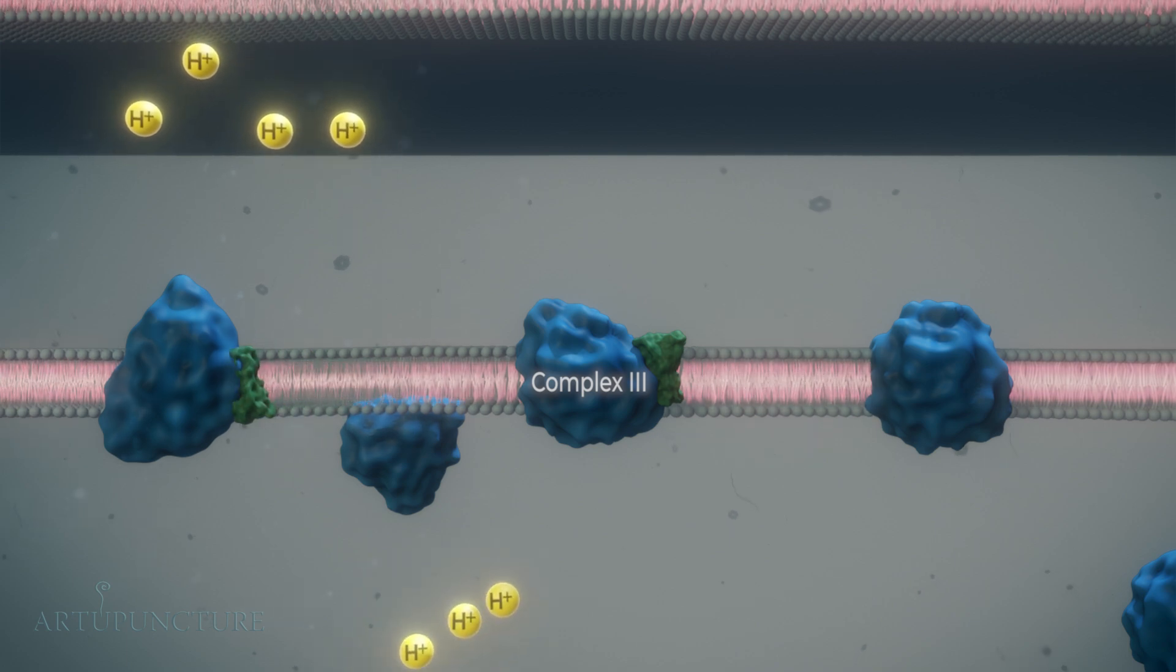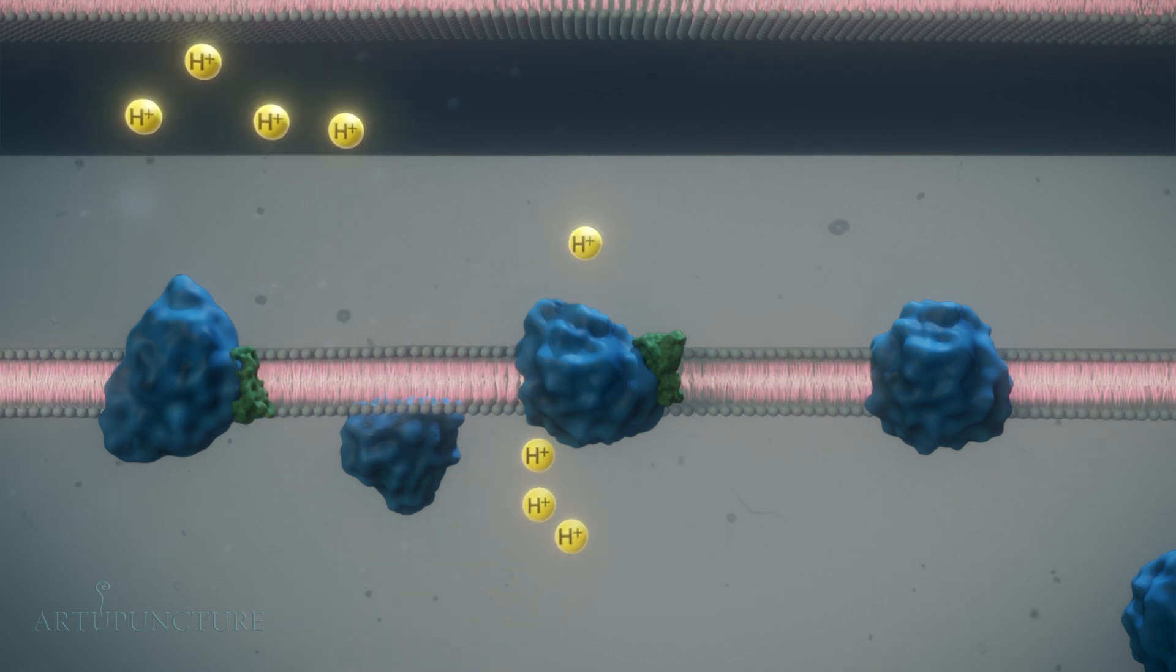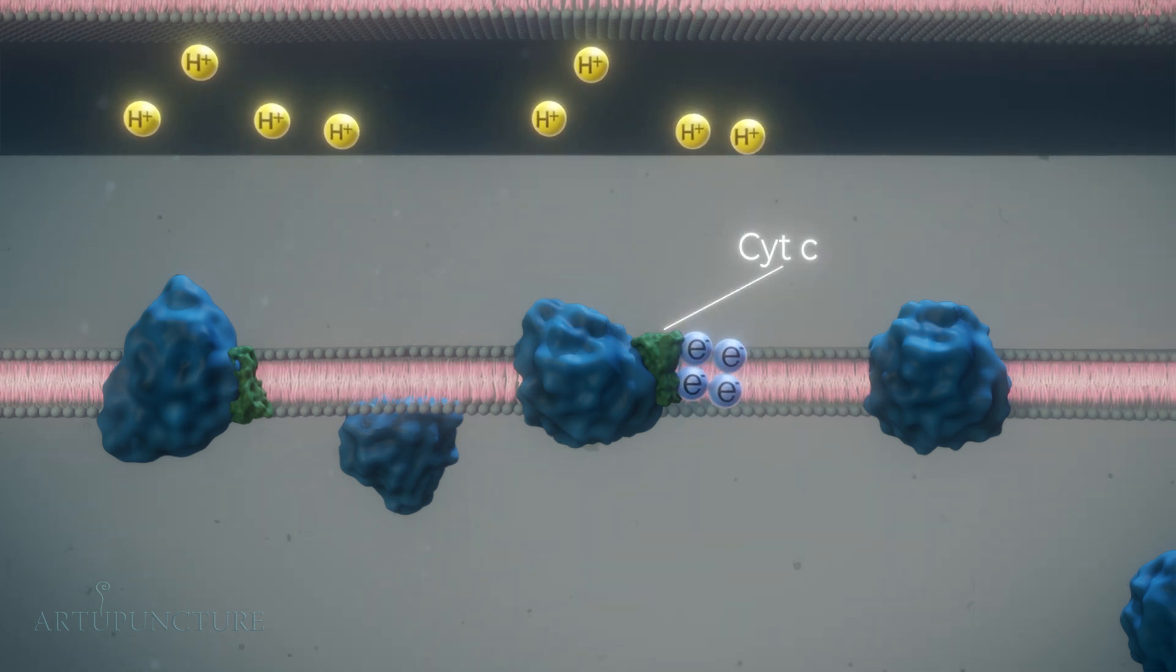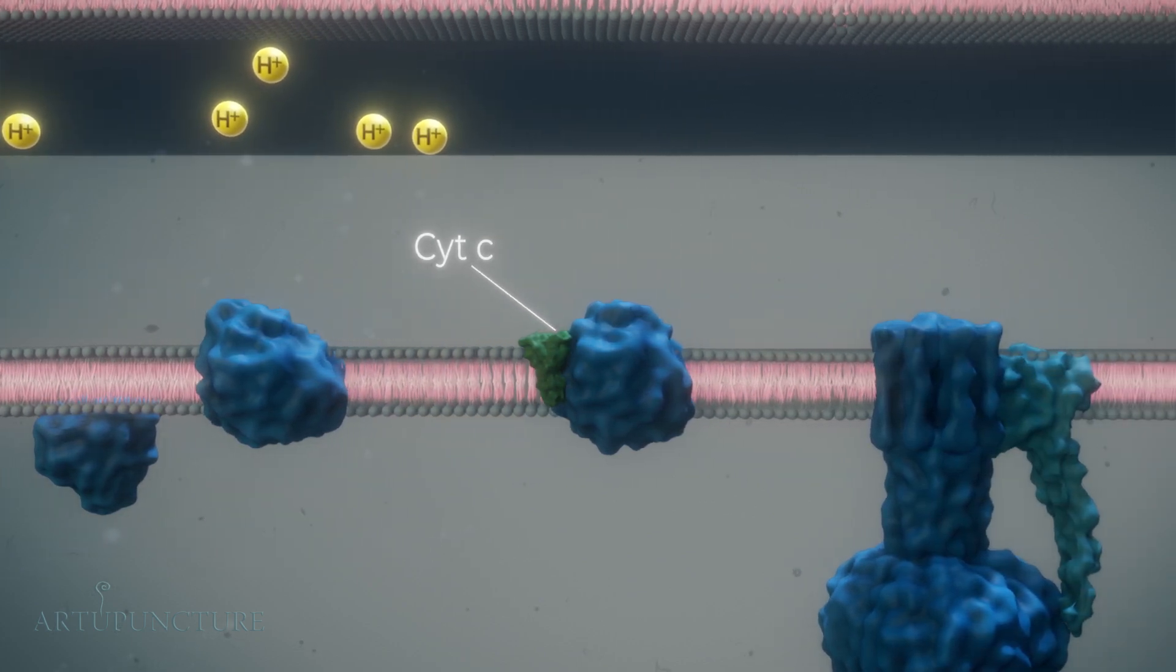Complex III uses the electron energy to pump protons into the intermembrane space. The protein cytochrome C shuttles electrons from complex III to complex IV.